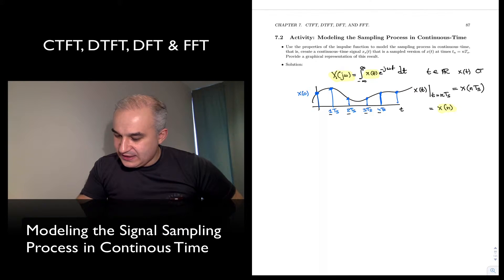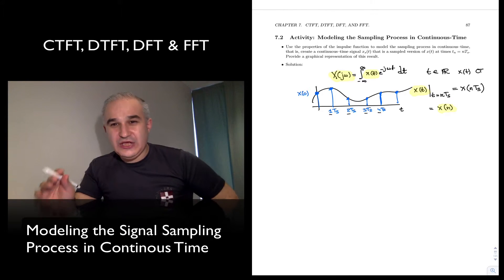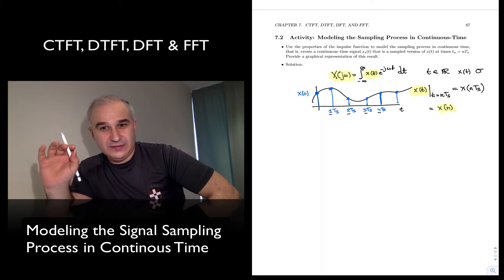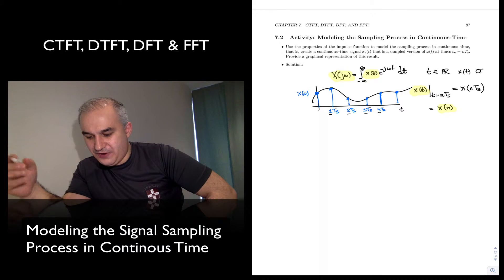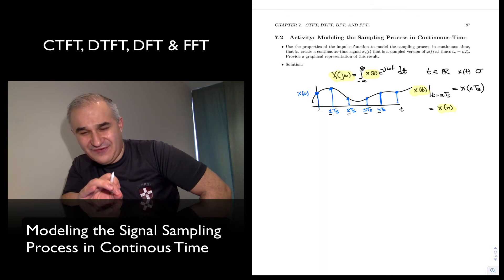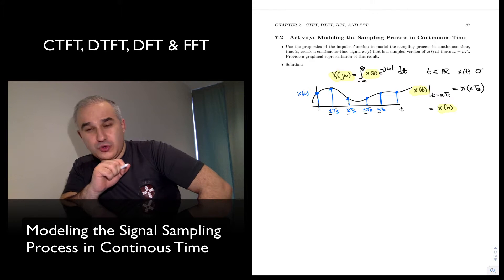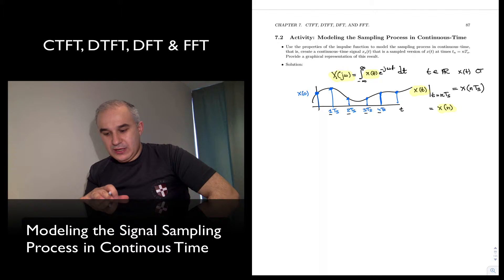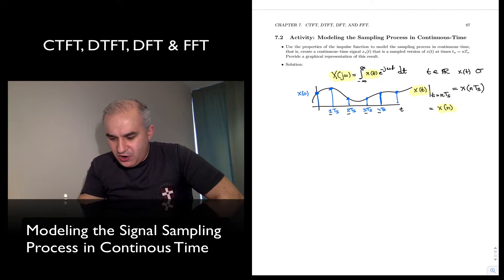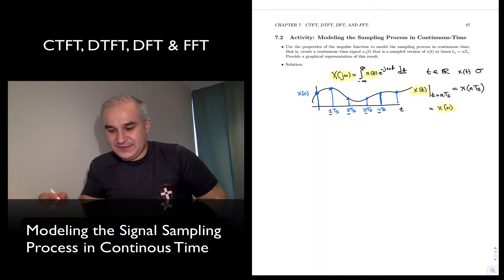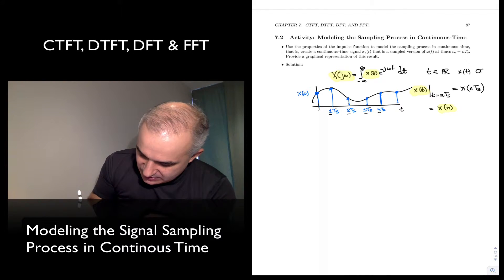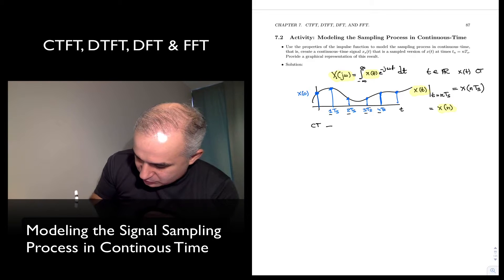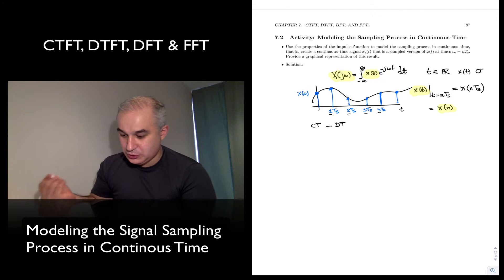If you sample fast enough — meaning greater than twice the maximum frequency of x(t), if x(t) is band-limited — you do not lose any information. What we are trying to do here is compute the spectrum of a sampled signal, a discrete time signal. The way we go from continuous time to discrete time is through sampling.